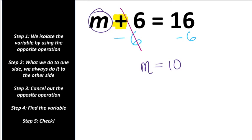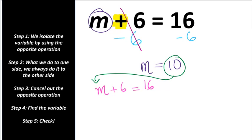Now we have to check our work to make sure m actually equals 10. Copy down the equation — m is 10, so substitute: 10 plus 6 is 16. The right side equals the left side — give yourself a check mark.